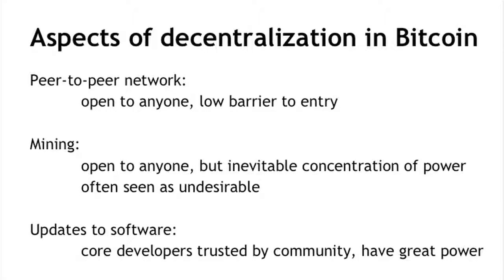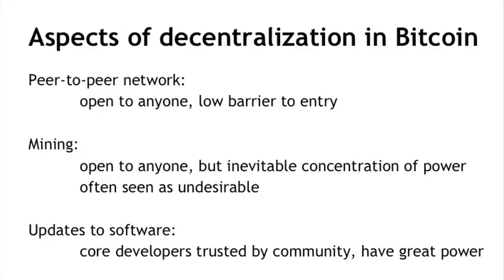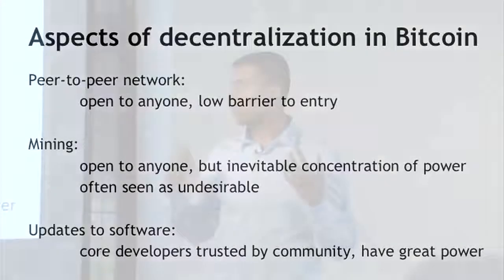Let me show you three different aspects of Bitcoin and where they fall on the centralization-decentralization spectrum. First, the peer-to-peer network — this aspect is the closest thing to purely decentralized because anybody can run a Bitcoin node and there's a fairly low barrier to entry. Currently there are several thousand Bitcoin nodes, so this really resembles a peer-to-peer decentralized system. But there's also Bitcoin mining, which is technically open to anyone, but it requires a very high capital cost. Because of this, there has been a high concentration of power in the Bitcoin mining ecosystem, which the community frequently sees as quite undesirable.